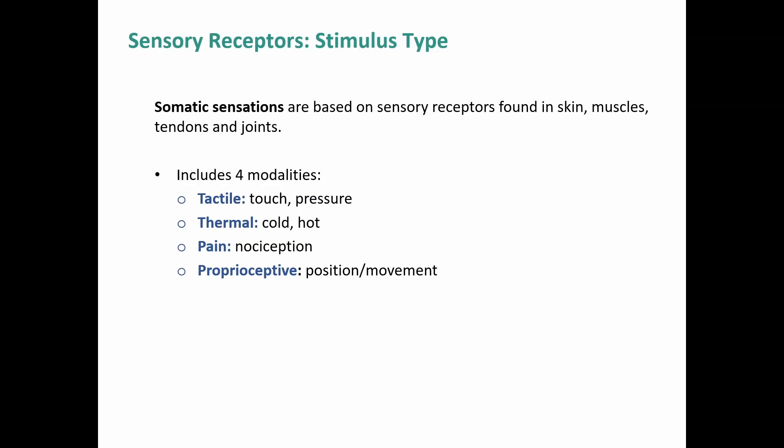For somatic sensations — based on receptors found in skin, muscles, tendons, and joints — there are four main modalities. Tactile includes touch, pressure, and vibration. Thermal covers temperature: hot or cold. Pain is what we call nociception. And proprioception is your body's sense of position or self-movement, including the small adjustments needed to maintain an upright position.